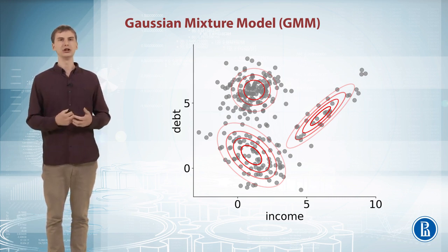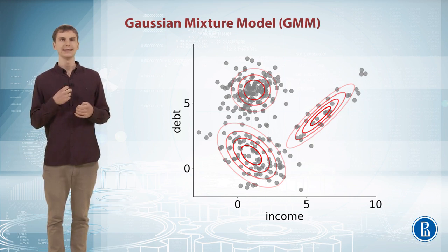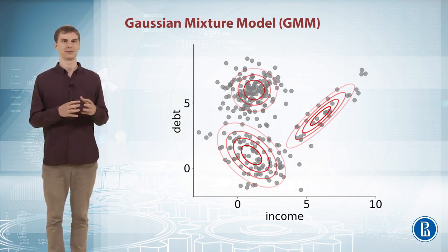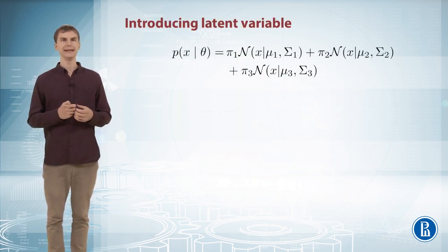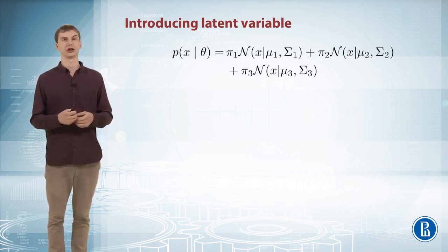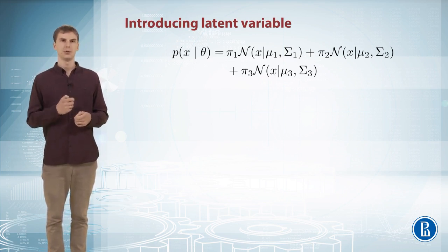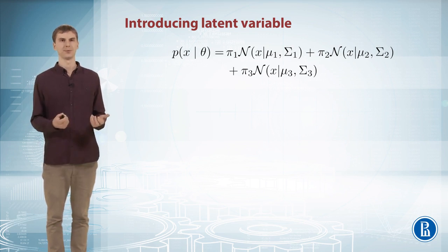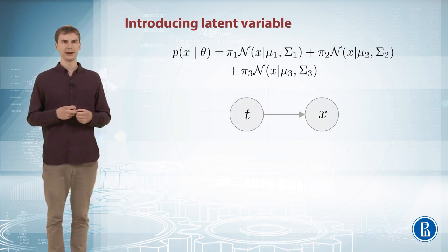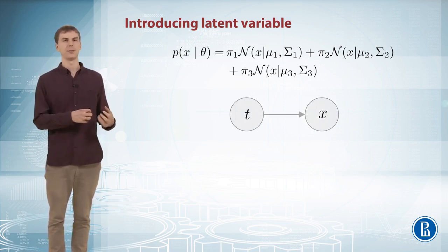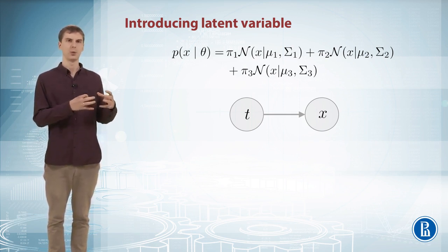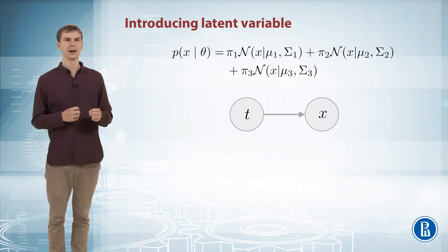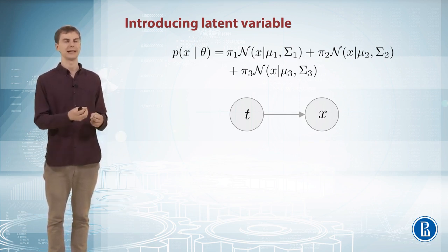To recall, the density of each data point in our Gaussian mixture model is a weighted sum of three, or in general as many as you want, Gaussian distributions. To start with, we will need to introduce a latent variable here because it will make the reasoning about our model much easier. We can say that each data point was generated using some information from a latent variable t, which exists such that we have one latent variable t for each data point x, and it causes x — it explains something about x.